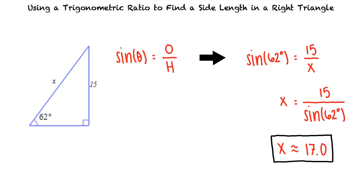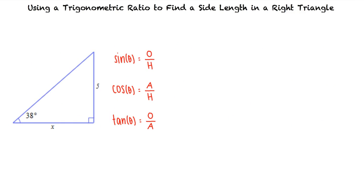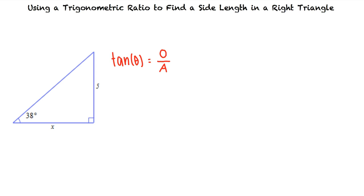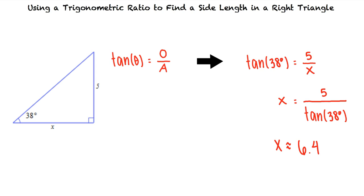Let's try one more problem. In this problem, we are given the length of the side opposite the angle and we need to find the adjacent side. So this means we'll use the tangent ratio. We can substitute in our known values and solve for x. Using our calculator, we see that the length of the adjacent side is approximately 6.4.